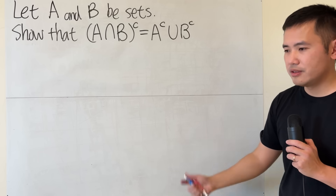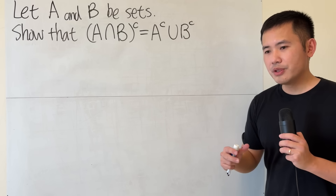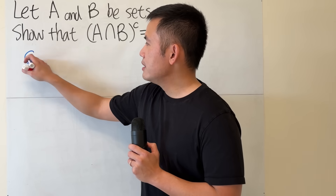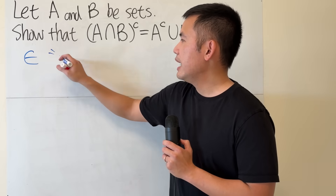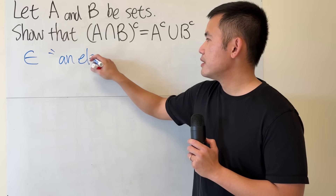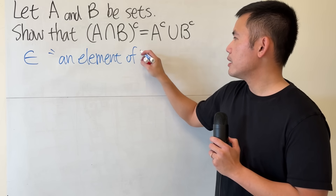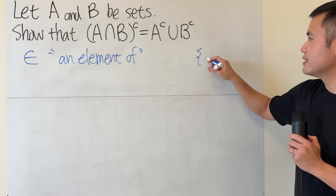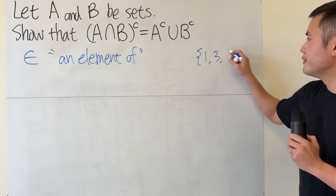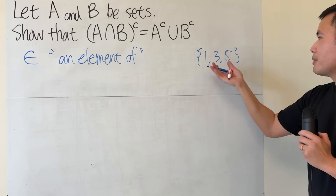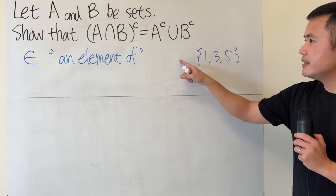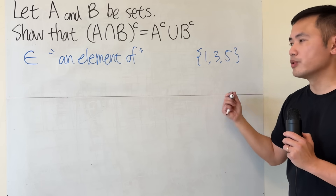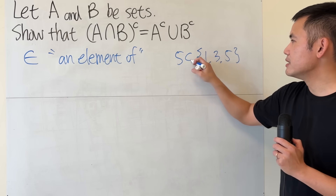How do you even start? First, I'm just going to explain all the notations. Right here we'll be using this notation, which means 'an element of'. For example, right here I can say we have a set — let's say a set of 1, 3, 5, the first three positive odd numbers. An element of this set: I can say 1 is an element, 3 is an element, 5 is an element. I can say 5 is in this set.